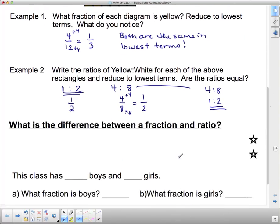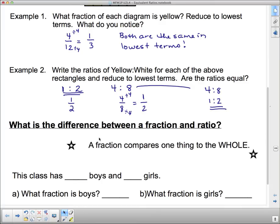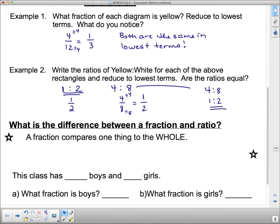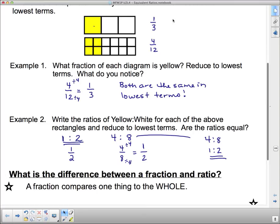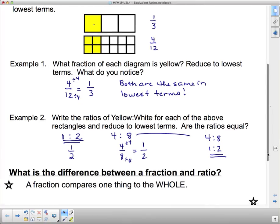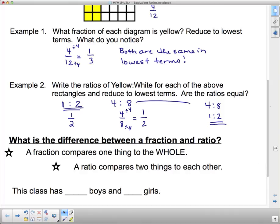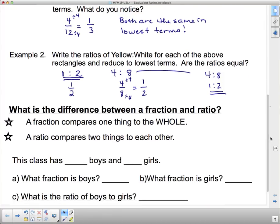So, what is the difference between a fraction and a ratio? We've just sort of talked about that, but let's get it down in writing. A fraction compares one thing to the whole. So we compared yellow to the total number of squares. So I've got 1 yellow over a total of 3 squares, or 4 yellow over a total of 12 squares. And a ratio? A ratio compares two things to each other. So our class has, and we're going to make this a hypothetical class, because there could be another class watching this later.